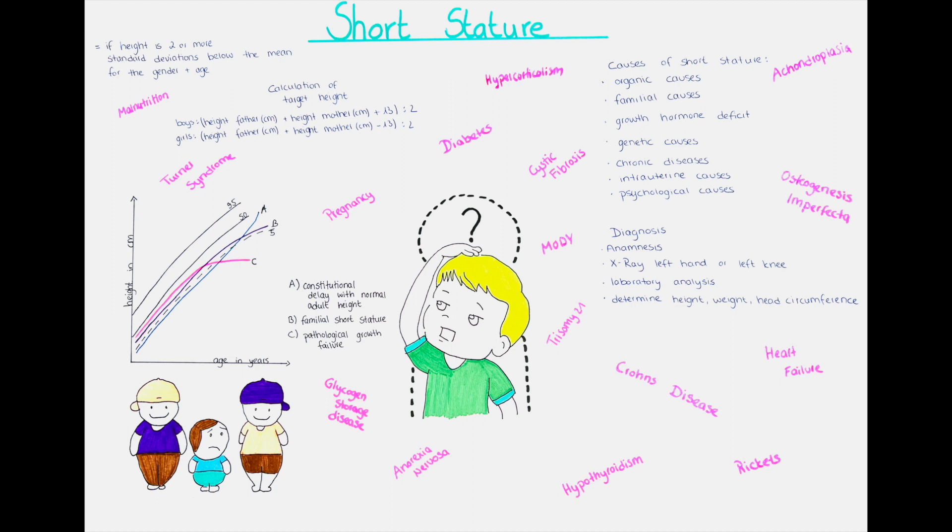The therapy depends on the cause of the short stature. In some causes it can be treated easily while others are unfortunately not able to be treated. If for example growth hormone deficiency is the cause of the small height, growth hormone can be supplemented until the target height is reached.